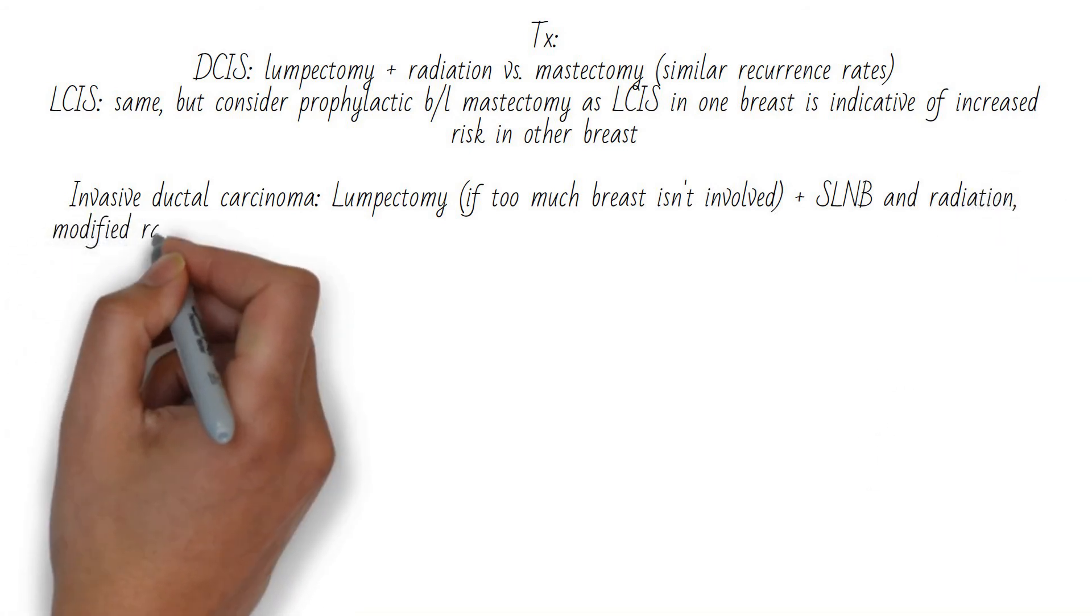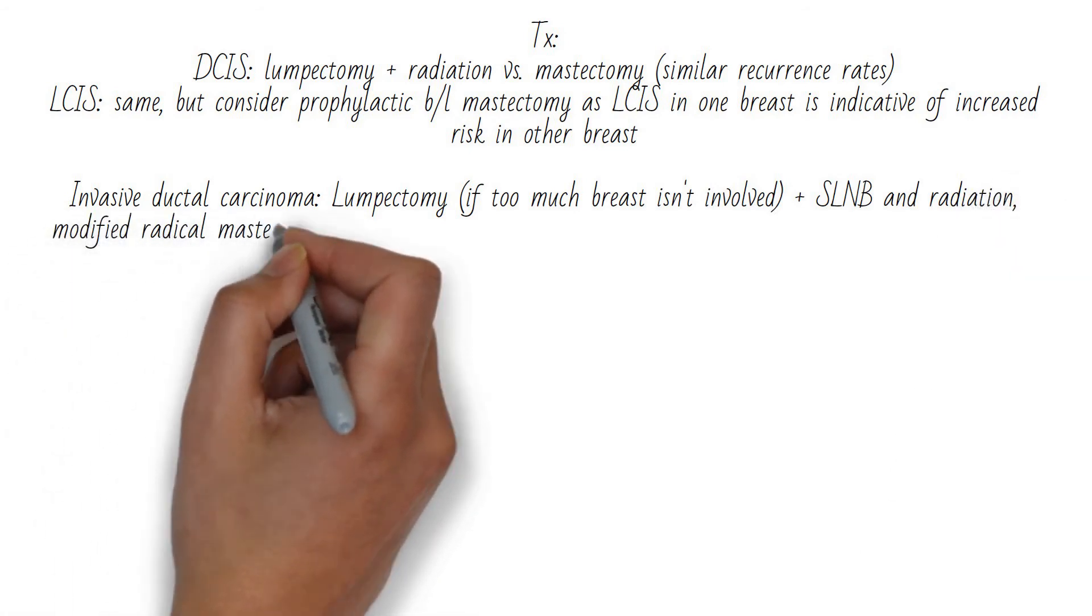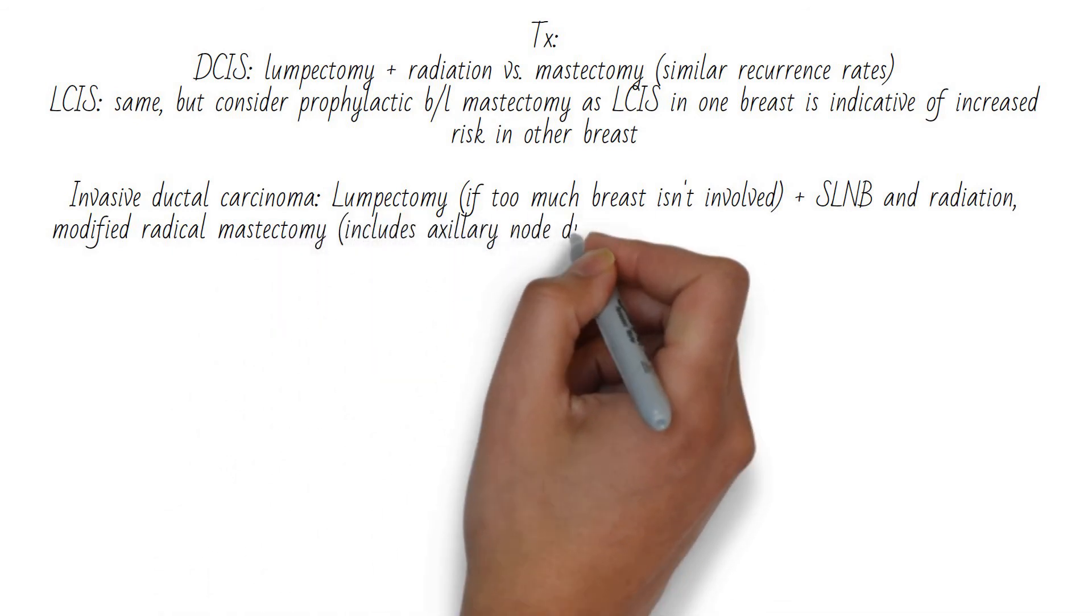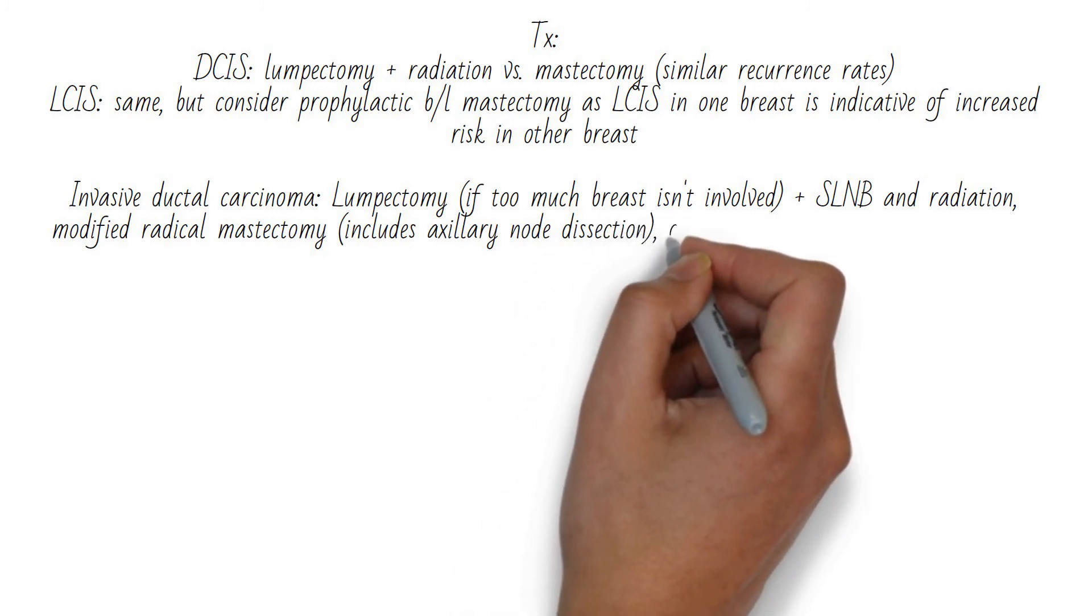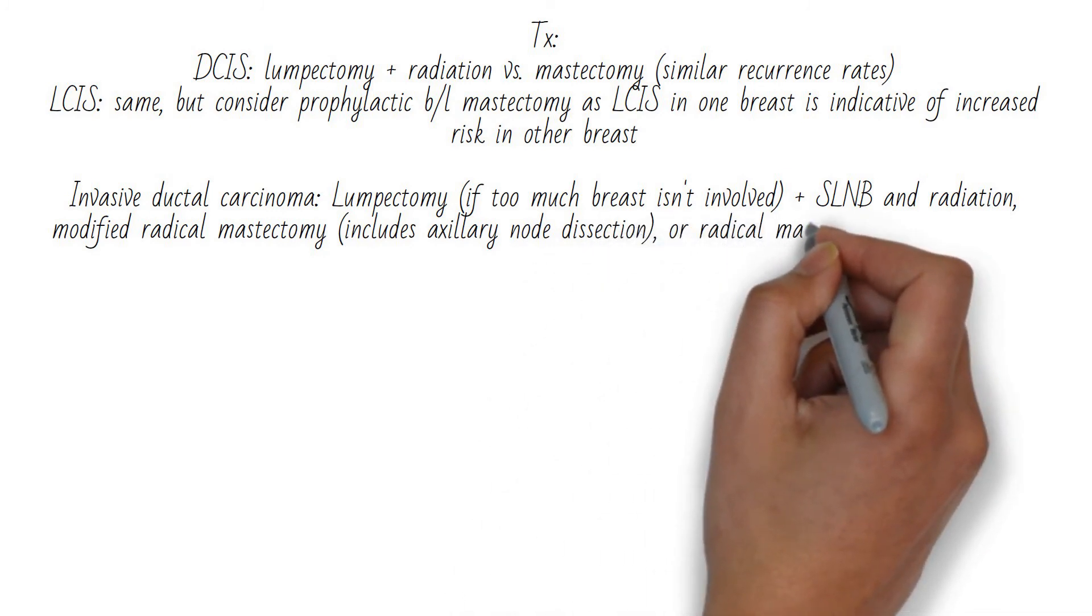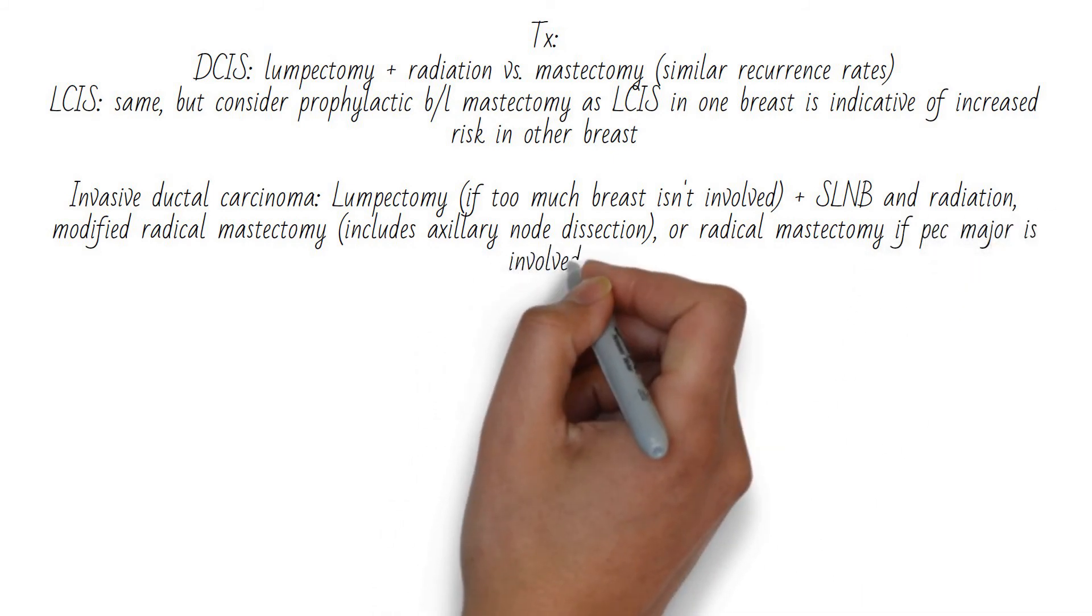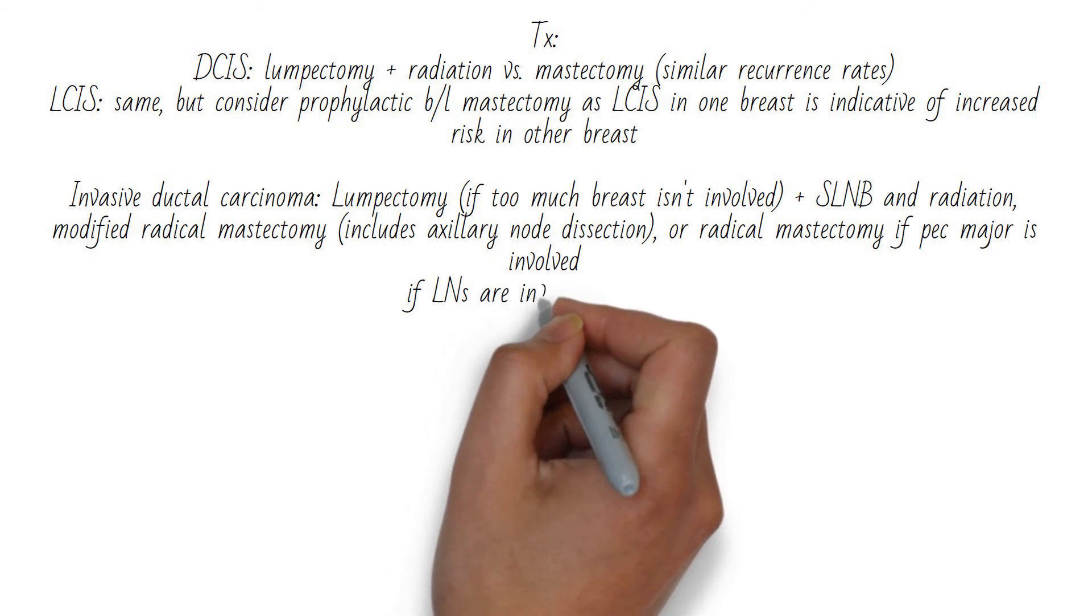For invasive ductal carcinoma, lumpectomy may still be performed if too much breast isn't involved, but sentinel lymph node biopsy and radiation are needed. Modified radical mastectomy, which includes axillary node dissection, is also an option. Radical mastectomy is necessary if the pec major muscle is involved.